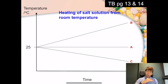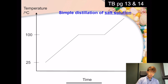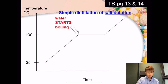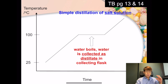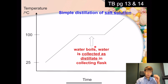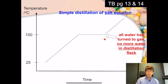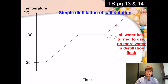Many of you may guess option B — that the temperature continuously increases — but the graph actually looks a bit different. It is generally increasing, but there is a moment where it remains constant. At the beginning, the solution heats up. Only when it reaches 100°C does the water start boiling. While the water is boiling, the temperature remains constant and water is being collected as distillate. Only after all the water has evaporated does the temperature start increasing again.